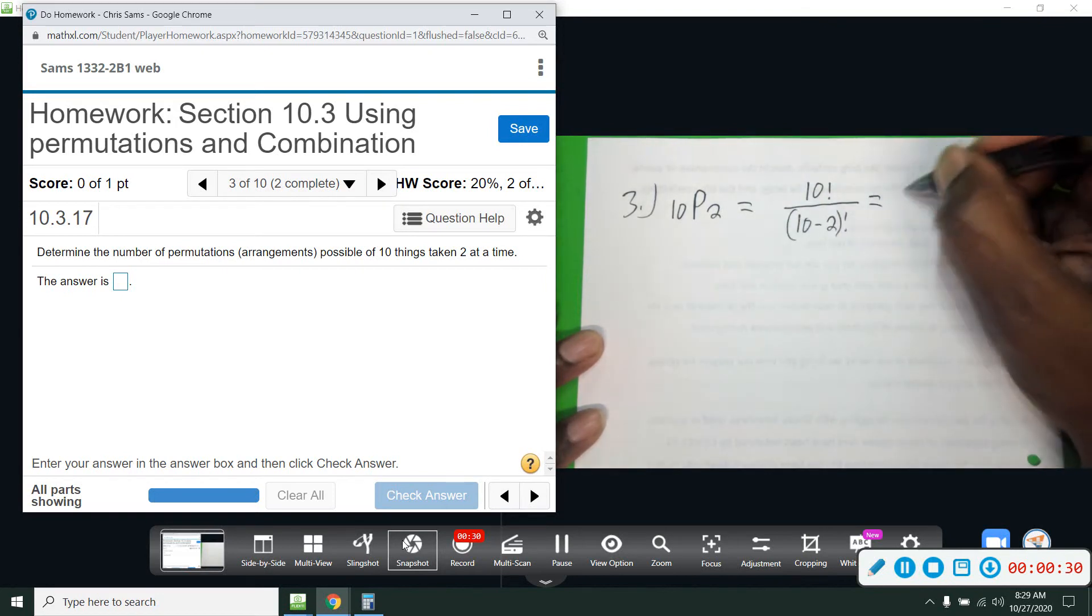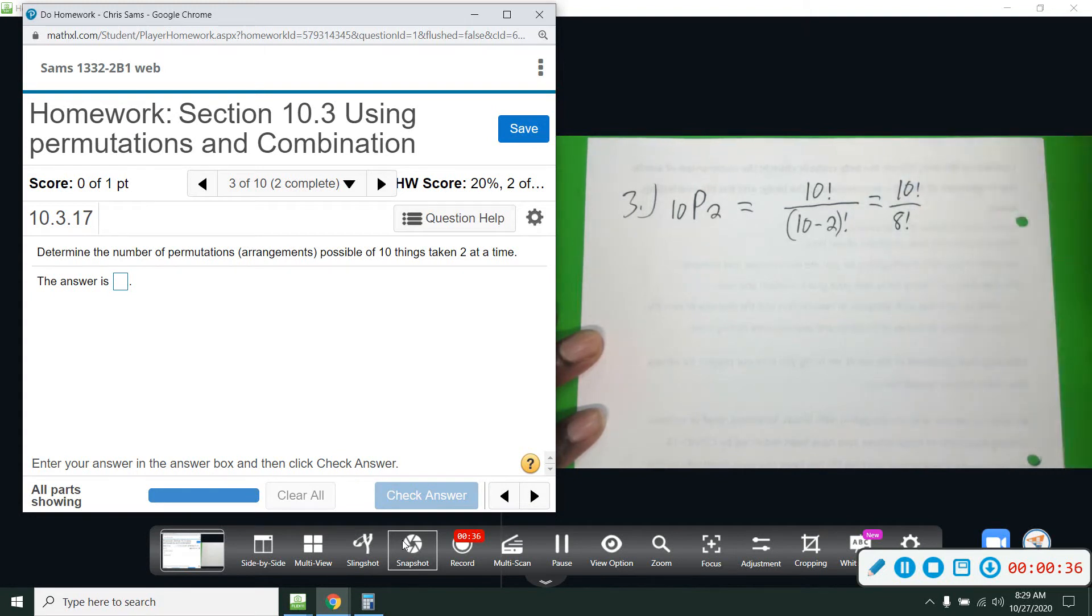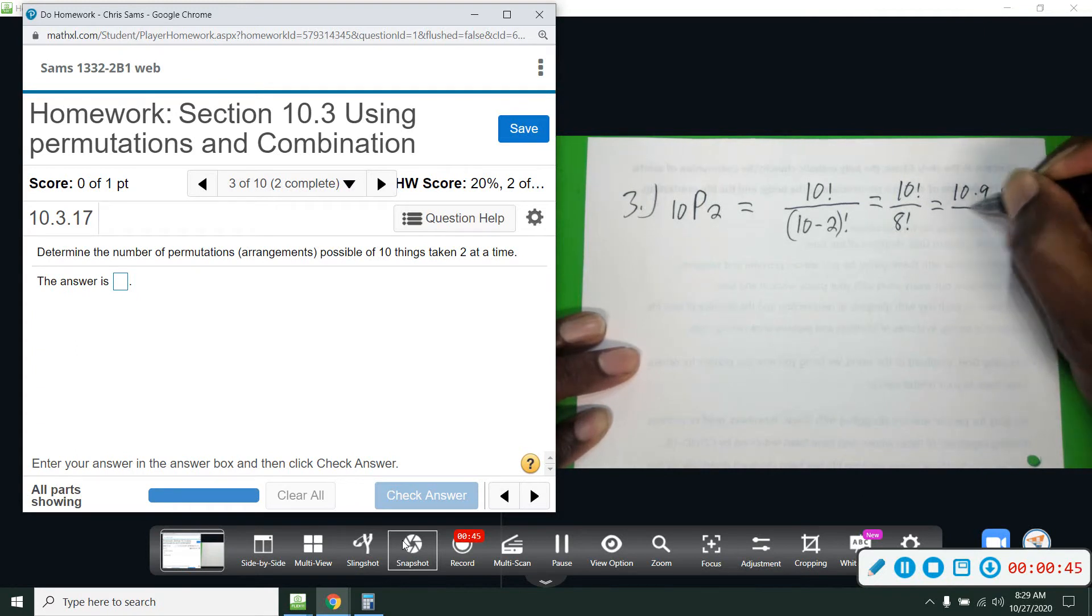Alright, so this will give us ten factorial over eight factorial, and then when we spell this out, ten times nine times eight. On the top I will stop and write eight factorial. On the bottom I will have eight factorial, and so we will divide those two out. We're left with ten times nine, and that gives us ninety.